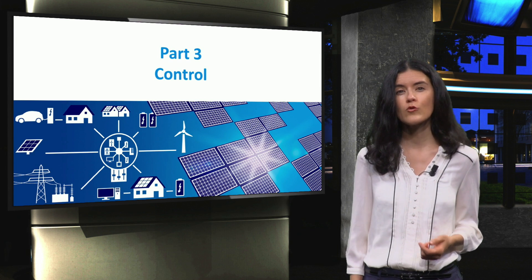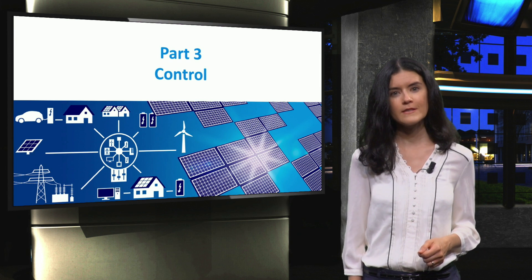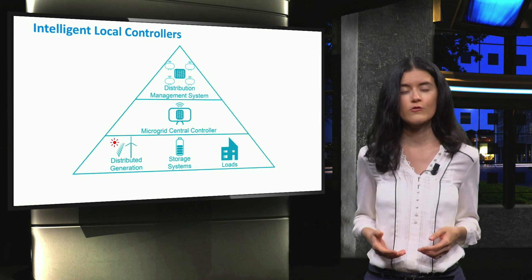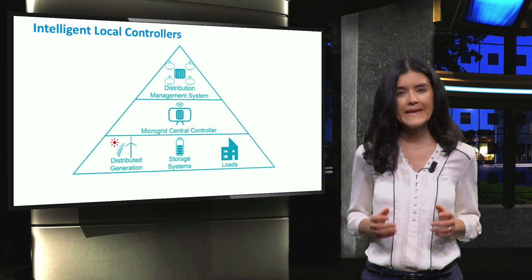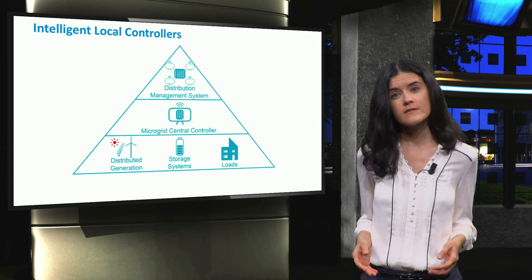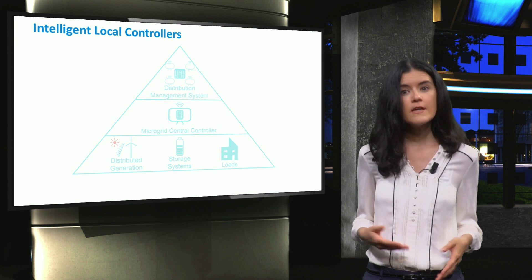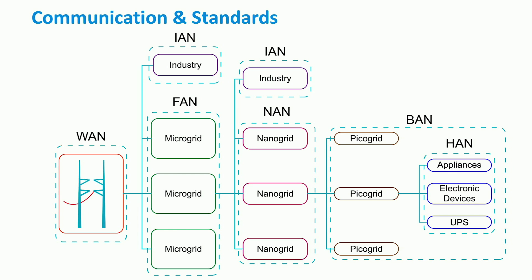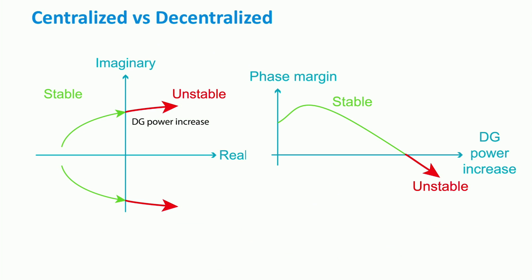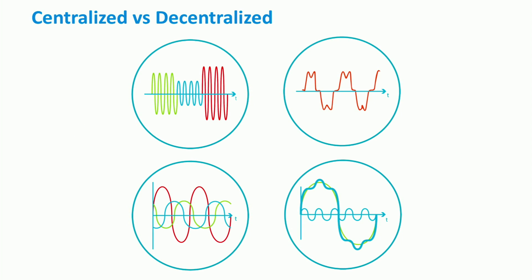In the third part of the PV4X course, we will discuss the control aspects of the microgrids. We will look into the intelligent local controllers and microgrid controllers and discuss the primary, secondary and tertiary control. You will be introduced to various types of power converters, and we will discuss the implementation of the frequency and voltage droop controllers. You will also learn about the communication schemes at different levels and the relevant standards for microgrids. We will wrap up the third part with centralized versus decentralized control in microgrids. We will discuss the stability in the presence of distributed generators and their potential impact on power quality and the continuity of electricity supply from the microgrids.